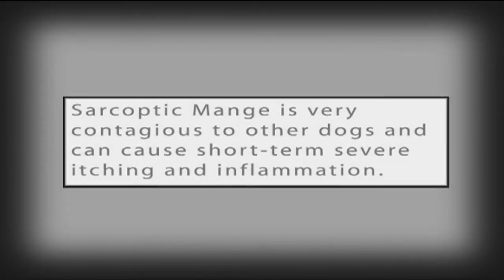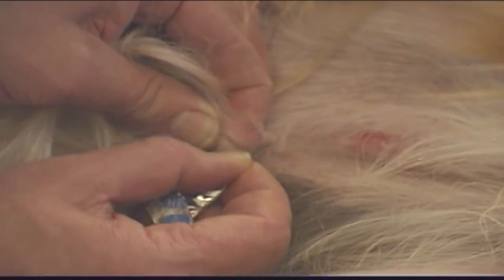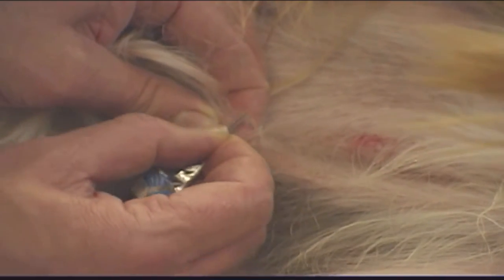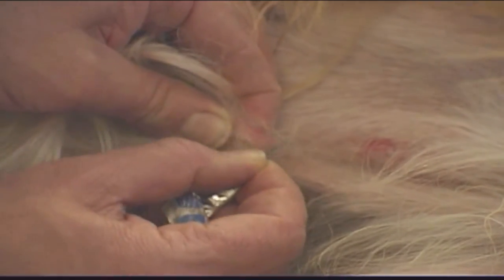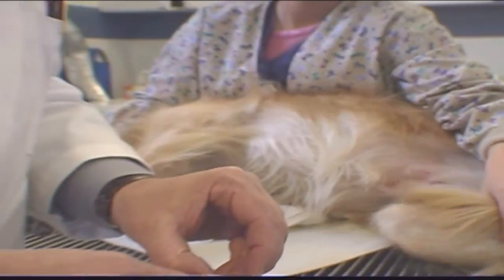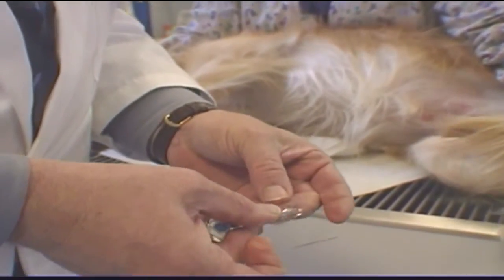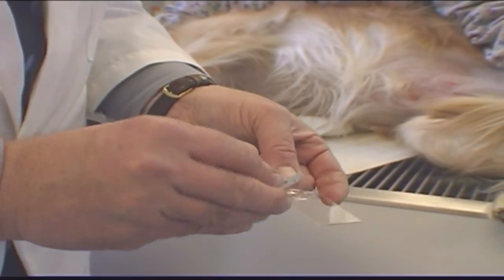Sarcoptic mange is very contagious between dogs. It causes severe itching and scratching and can also be transmitted to humans, causing localized itching and inflammation. This itching in humans is usually only temporary, as the parasites die within a few days after leaving the dog.